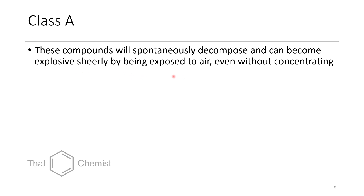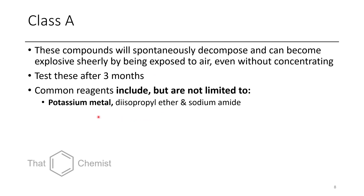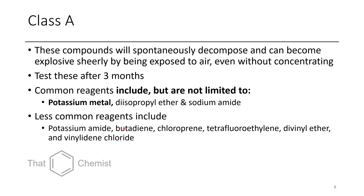Class A chemicals can spontaneously decompose and become explosive just by being exposed to air without you doing anything. It's worth testing these after three months once you've opened the bottle. Common Class A examples include potassium metal, diisopropyl ether, and sodium amide. Potassium metal is probably the most common among these. However, some departments still have old bottles of diisopropyl ether, which can be a real hazard. There are some less common Class A examples shown on screen, and there are links at the end of the video where you can find other examples.